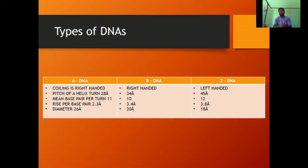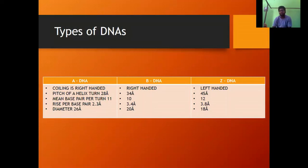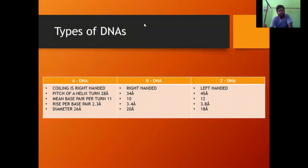The types of DNA are A-DNA, B-DNA, and Z-DNA. A-DNA and B-DNA are right-handed, while Z-DNA is left-handed. The pitch of the helix is 28 Ångströms in A-DNA, 34 Ångströms in B-DNA, and 45 Ångströms in Z-DNA. Mean base pairs per turn: 11 in A-DNA, 10 in B-DNA, and 12 in Z-DNA. The rise per base pair is 2.3 Å in A-DNA, 3.4 Å in B-DNA, and 3.8 Å in Z-DNA. Diameter is 26 Å in A-DNA, 20 Å in B-DNA, and 18 Å in Z-DNA.